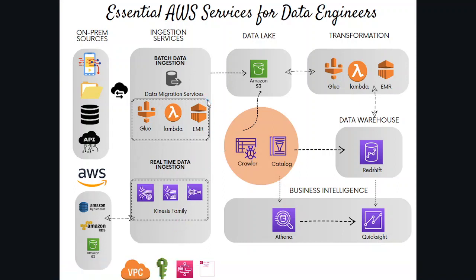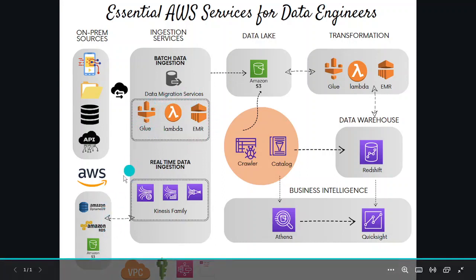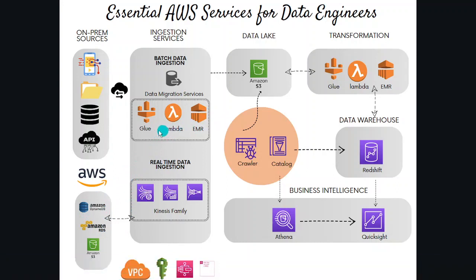Batch data ingestion works for scenarios like data warehousing, large-scale data processing, or dashboarding and BI use cases, while real-time ingestion is more for fraud detection, recommendation systems, and real-time dashboarding. For batch ingestion, if we are pulling or migrating data from on-prem we can use the Data Migration Service. Once the data is in the cloud, we can use AWS Lambda, Glue, or EMR to process that data and put it into the data lake.